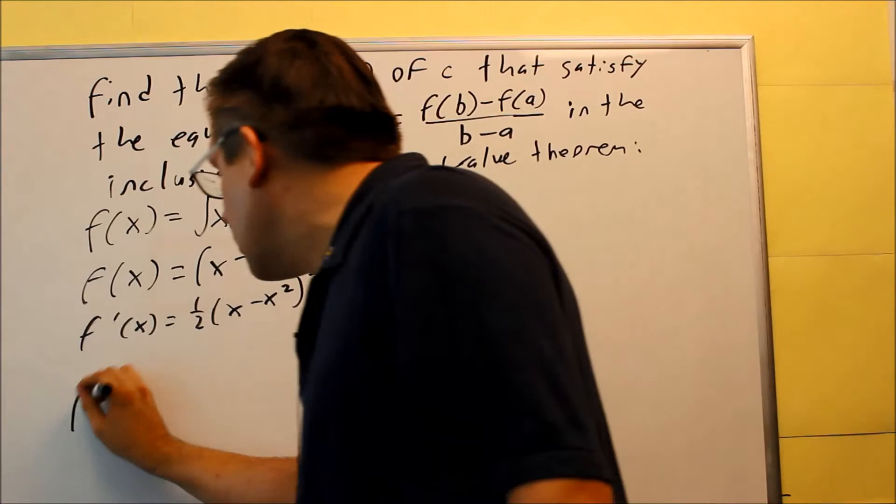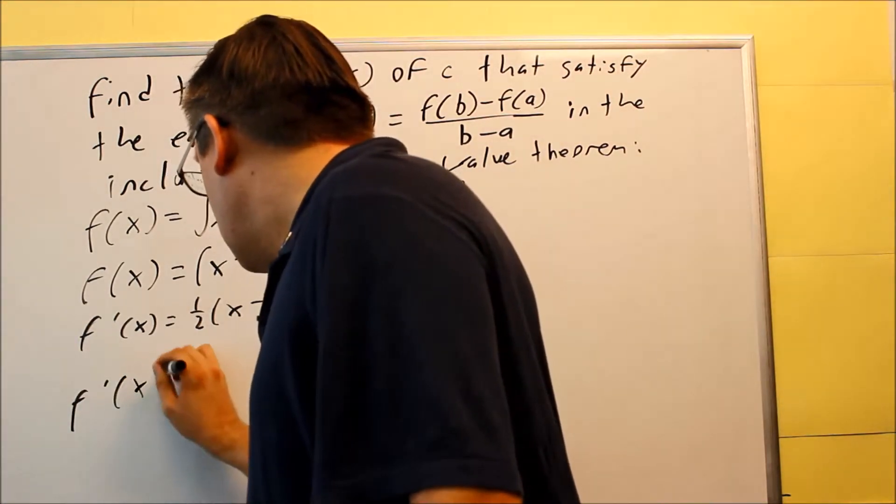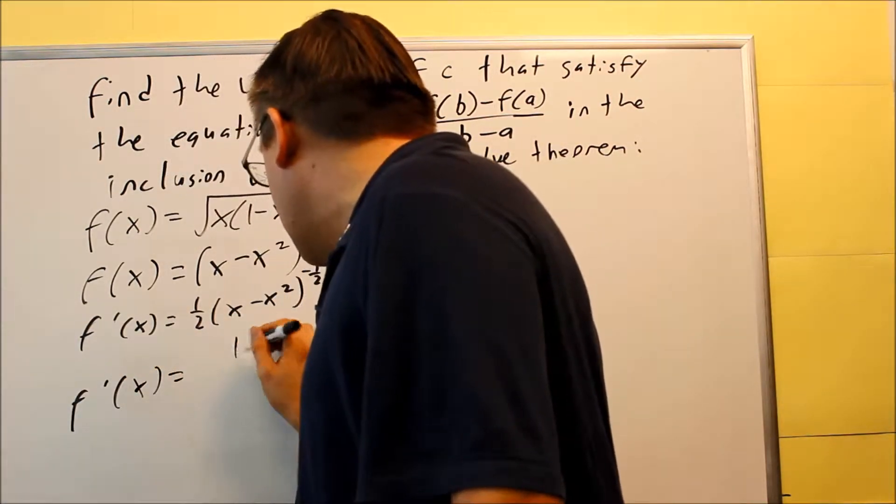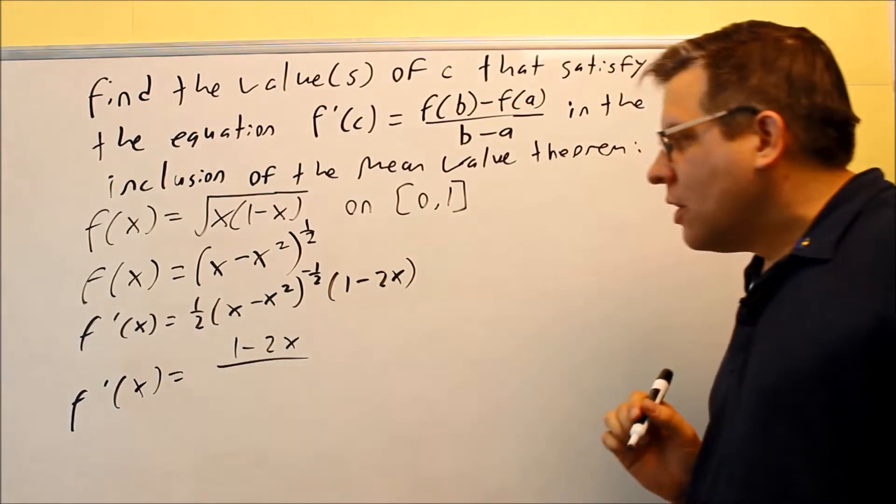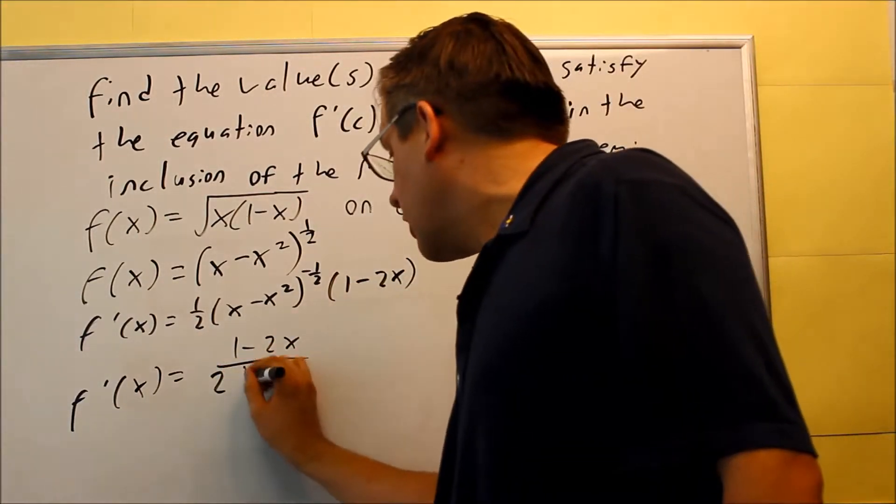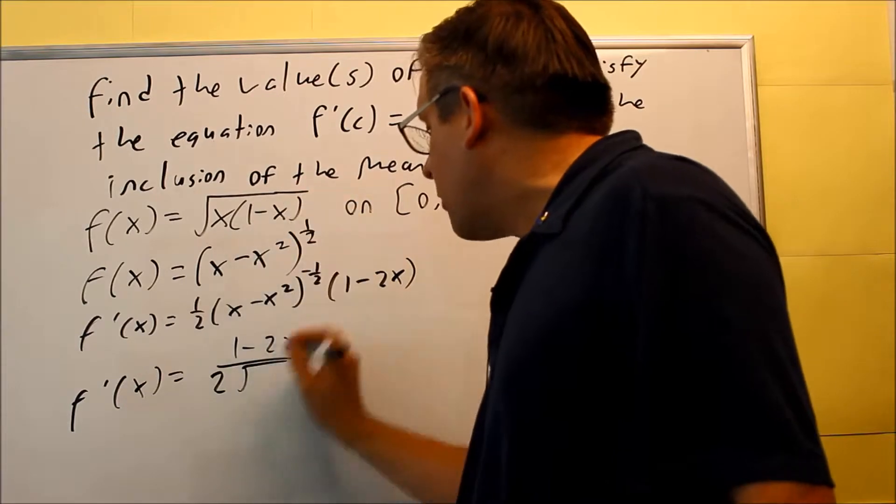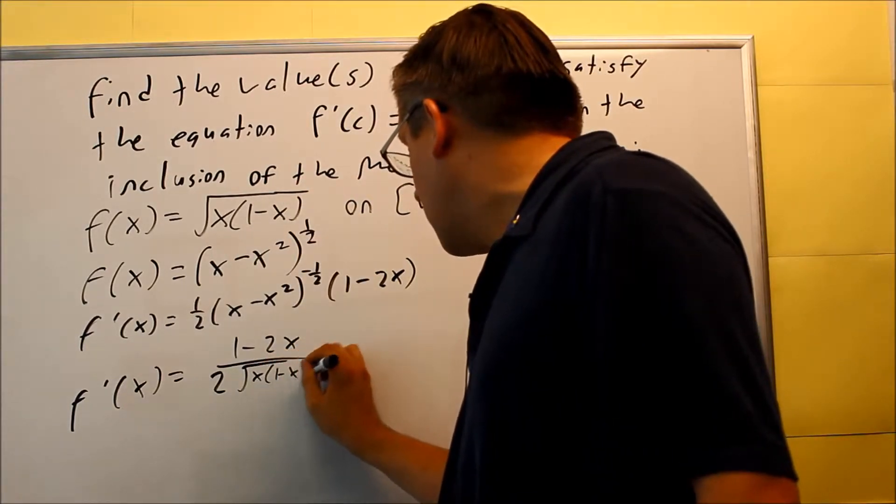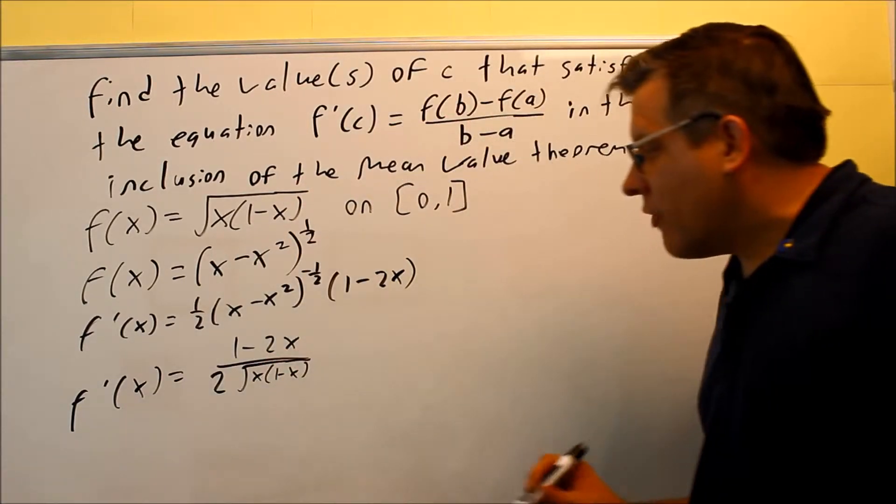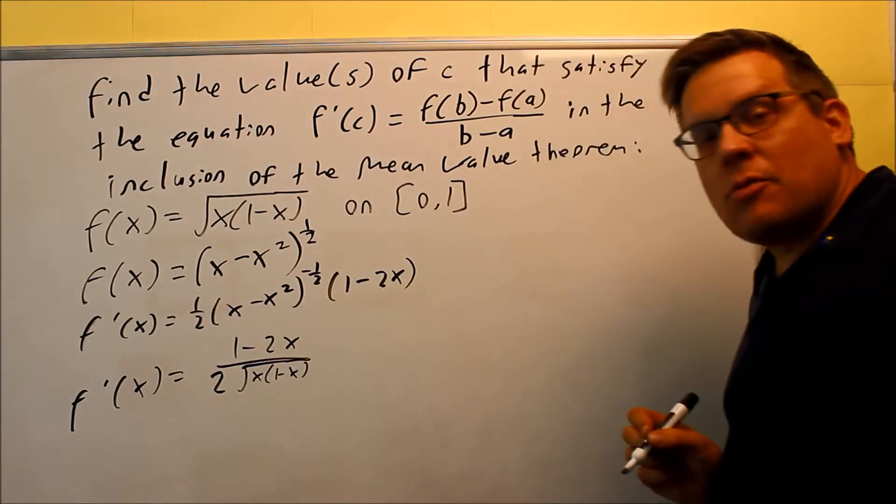Let's rewrite it into a fraction. That's going to be, on top I have 1 minus 2x. On the bottom I have a 2, and then the square root of, I'm going to go ahead and write it back in the original form. So I have 2 square root x times 1 minus x.